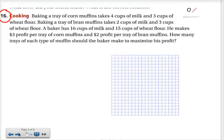And then let me get to one more of these where I'm just going to help you set it up. This one is cooking. Baking a tray of corn muffins takes four cups of milk and three cups of wheat flour. Baking a tray of bran muffins takes two cups of milk and three cups of wheat flour. A baker has 16 cups of milk and 15 cups of wheat flour. Now those definitely are some totals up there. And he makes $3 profit per tray of corn muffins and $2 profit per tray of bran muffins. How many of each type should he make to maximize profit? So I'm not going to use cost this time. We're going to use P for profit.